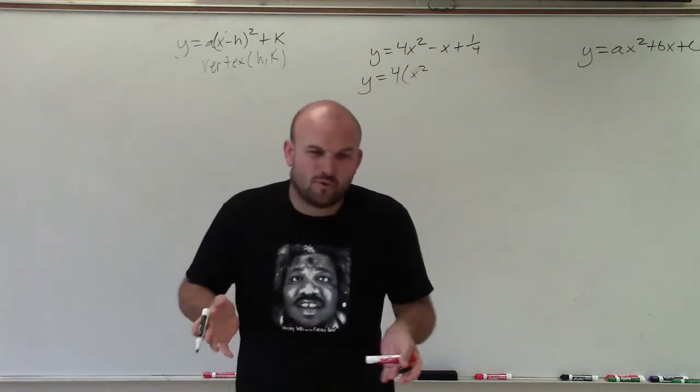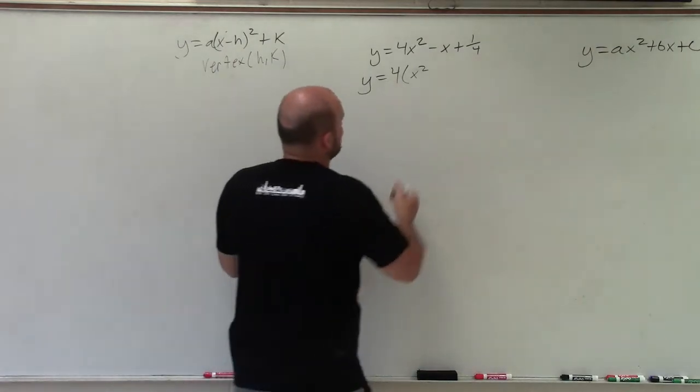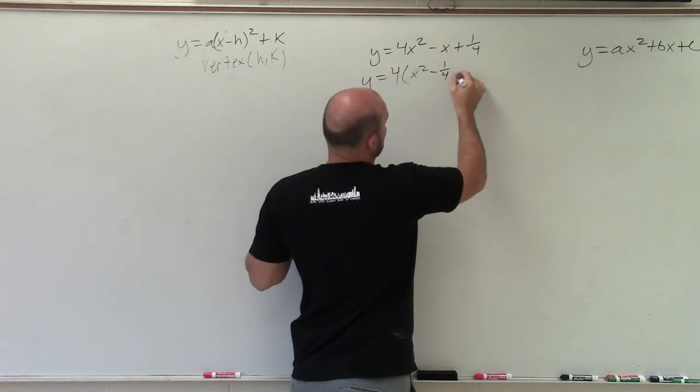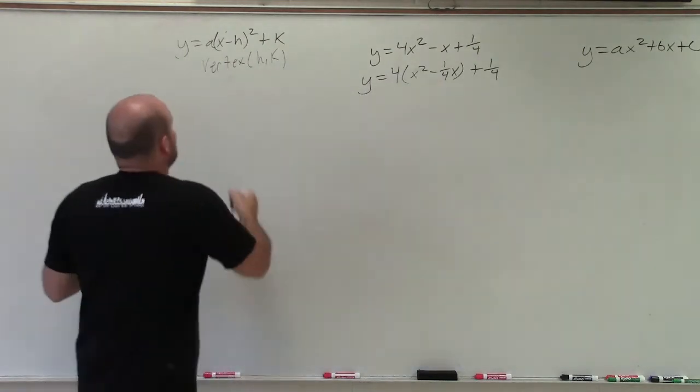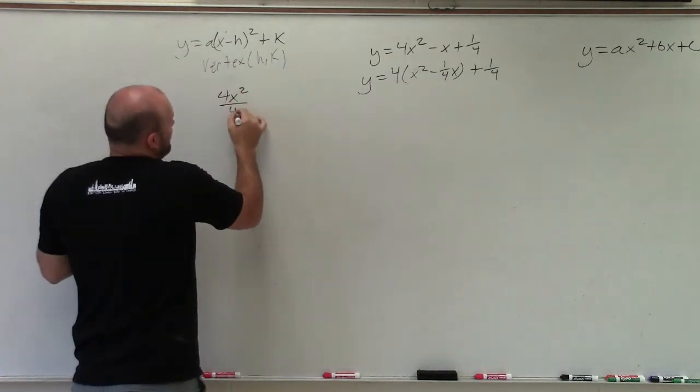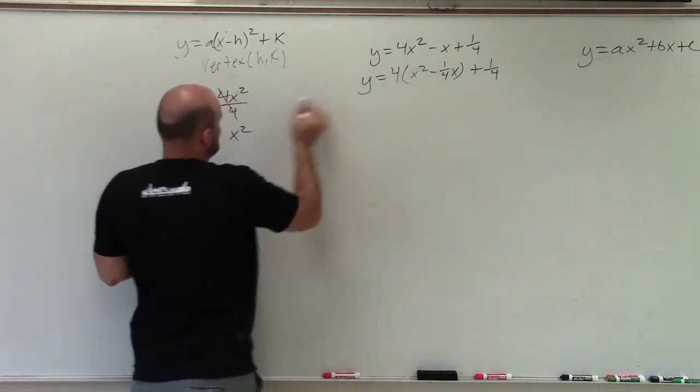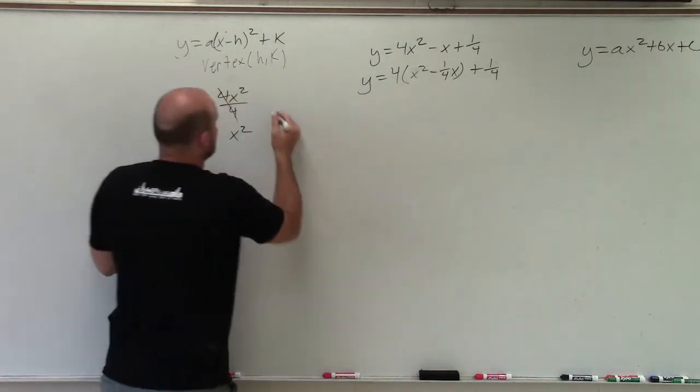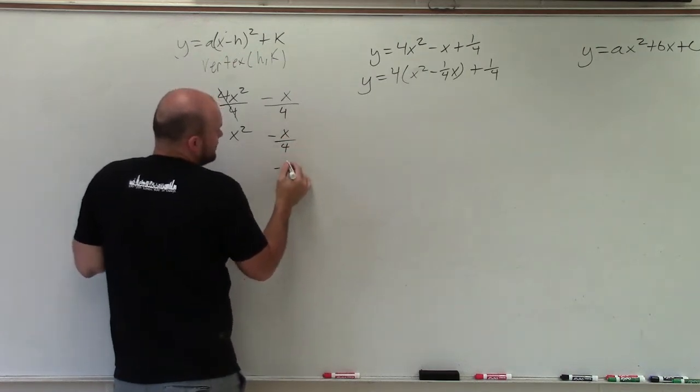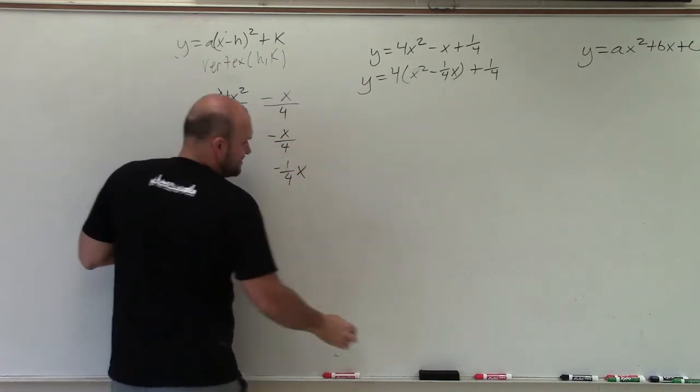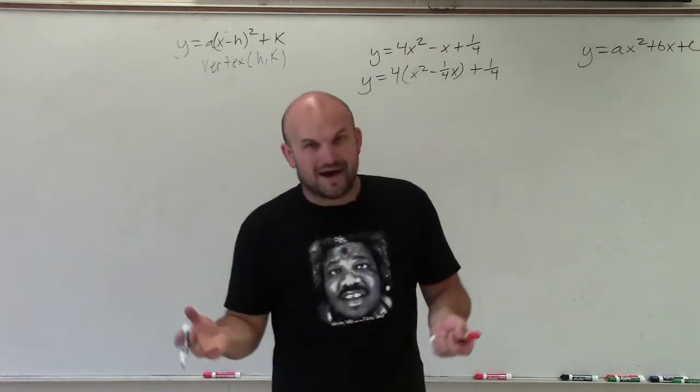Now this becomes difficult because how do you factor out a 4 from negative 1? Well think of factoring out the same thing as dividing by 4. So this is going to be negative 1 fourth x plus 1 fourth. When I factor out a 4 out of 4x squared I'm left with x squared. Negative x divided by 4 equals negative 1 fourth x because we want to know what that coefficient is, and I'll explain why in just a second.